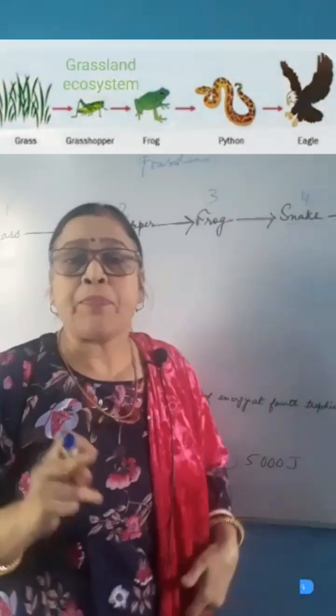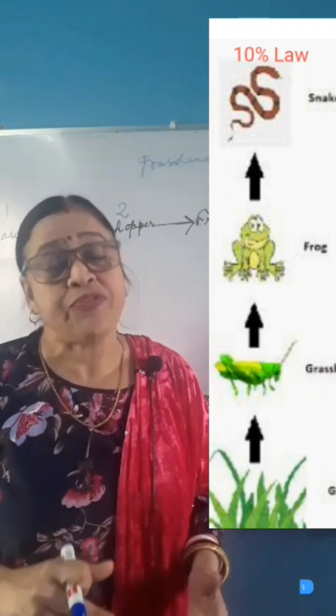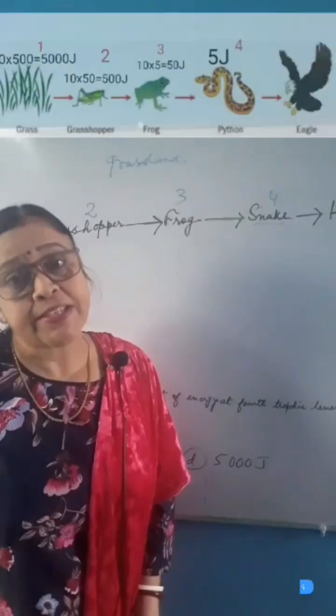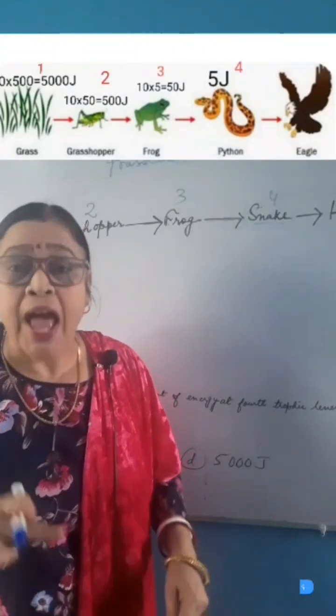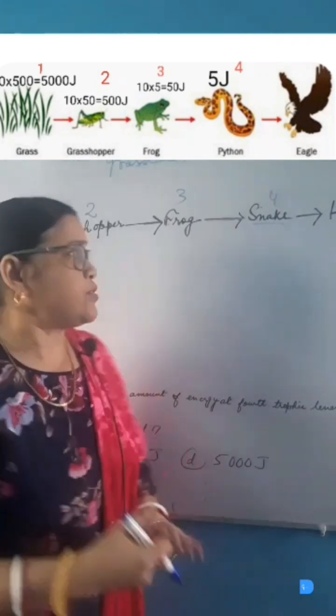Food chain follows the 10% law, which means that 10% of energy will be transferred from one trophic level to the next. Which basically means that the successive trophic level will have 10 times more energy comparative to the next one.